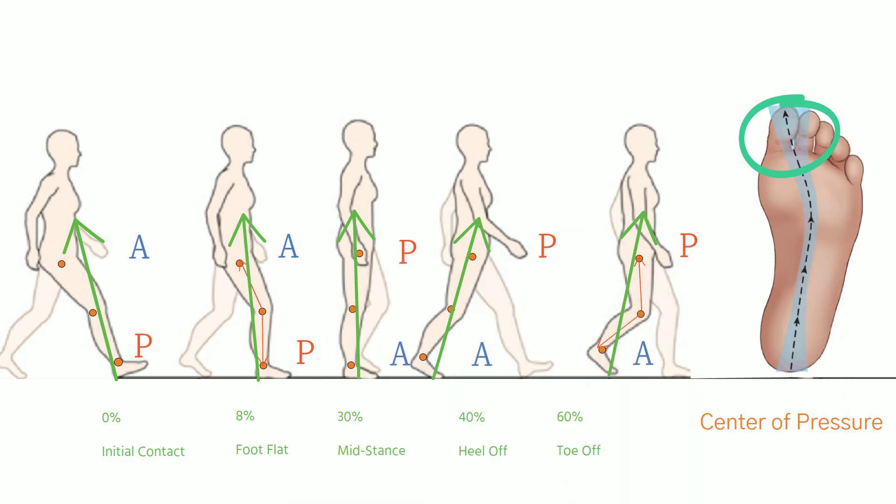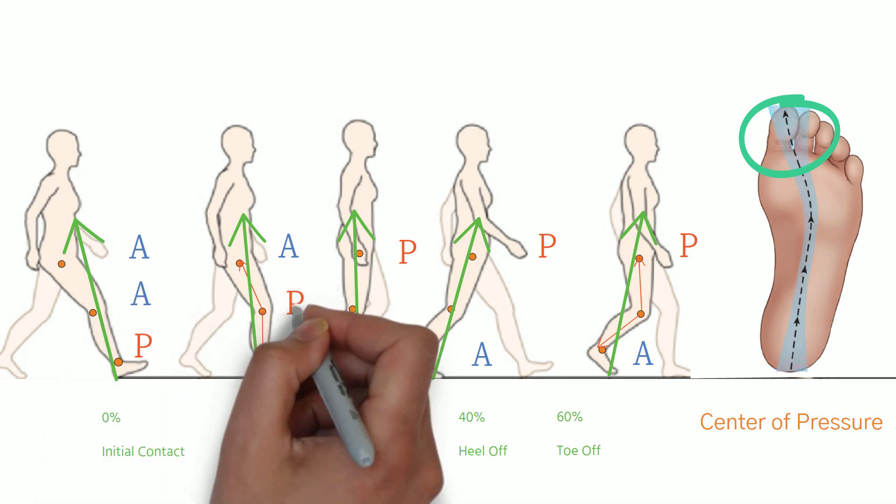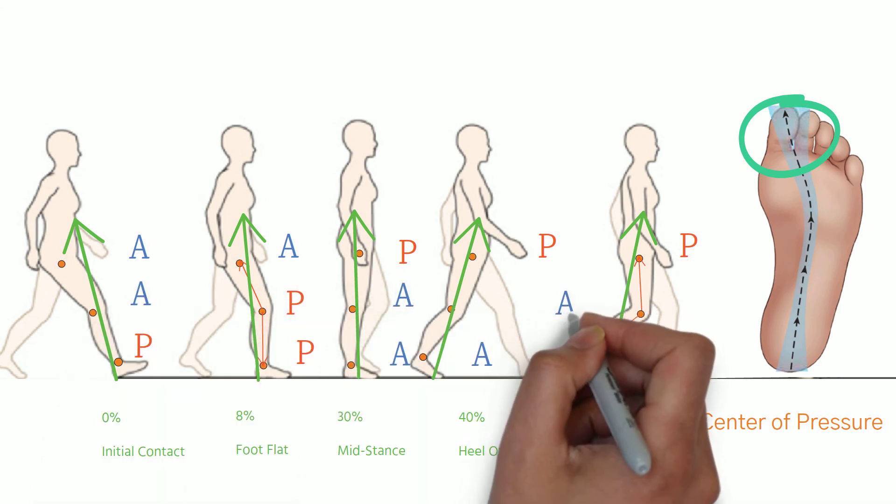And finally, for the knee joint, it's anterior, posterior, anterior, anterior, posterior.